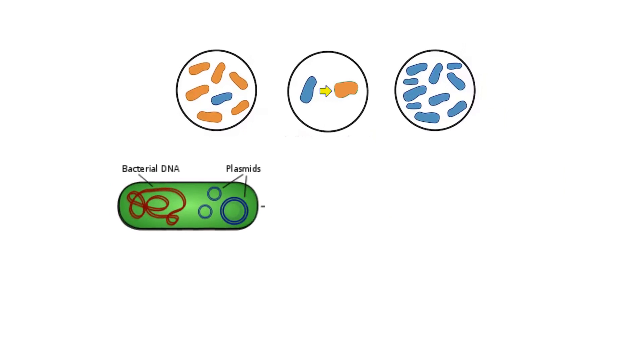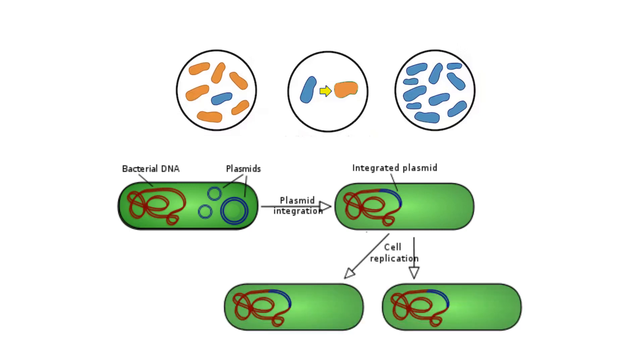A plasmid ring of DNA from one bacterial cell that contains antibiotic-resistant genes can be transferred to another bacterial cell, allowing another bacterial cell to acquire the antibiotic-resistant genes.